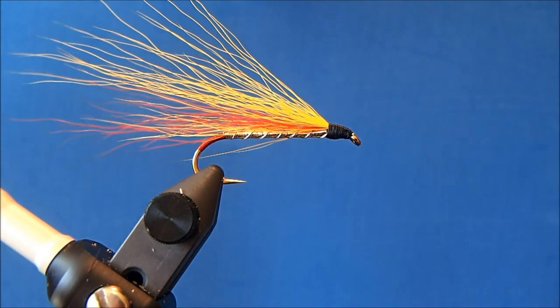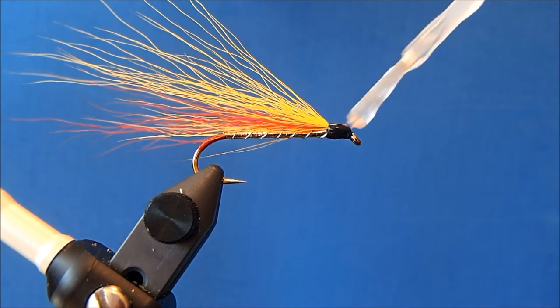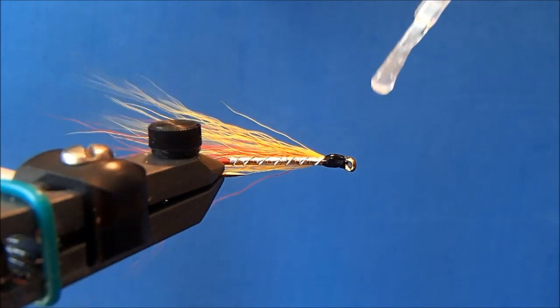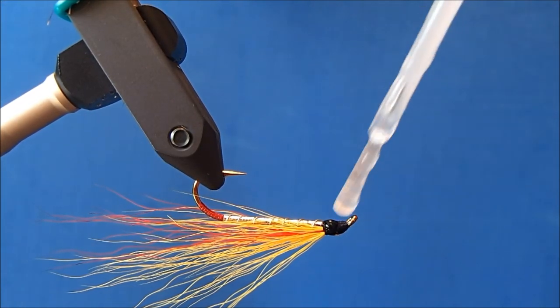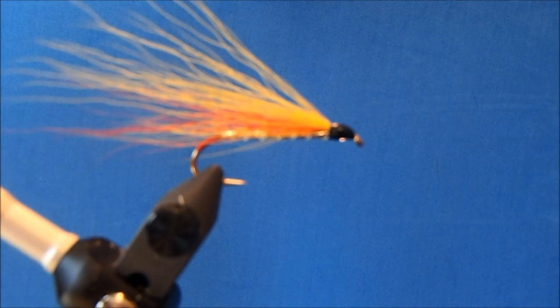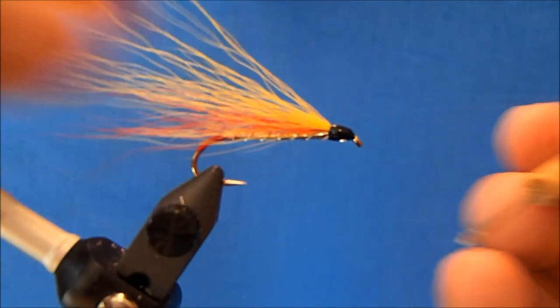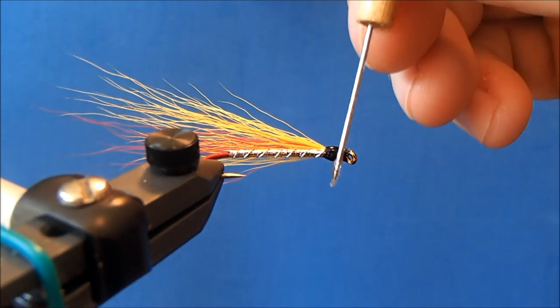And now finally I'll coat this with a little more Sally Hansen's, again to help protect and it also will fill in, blend those threads together. So just a little bit of that on and I'll come back through with my bodkin, smooth it out.